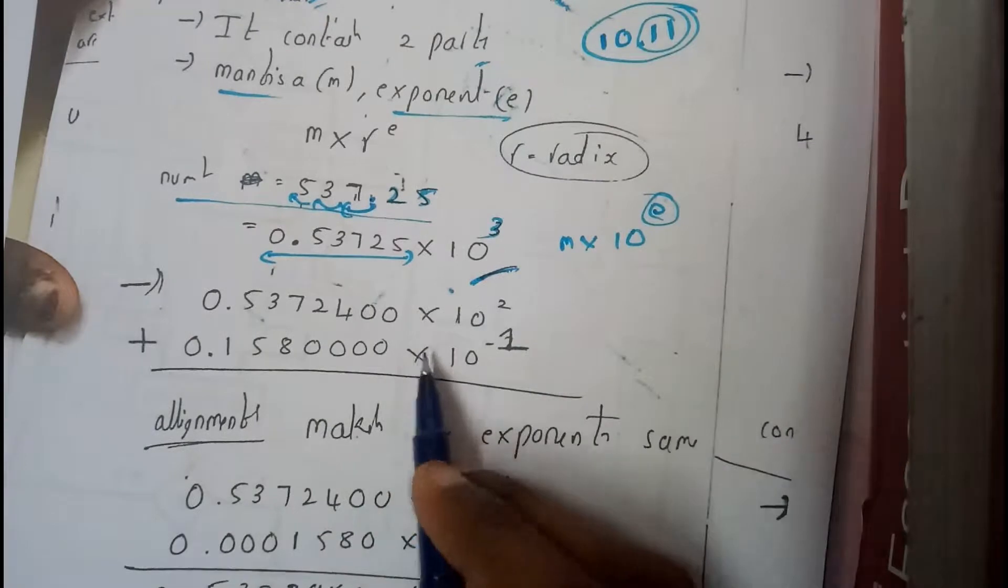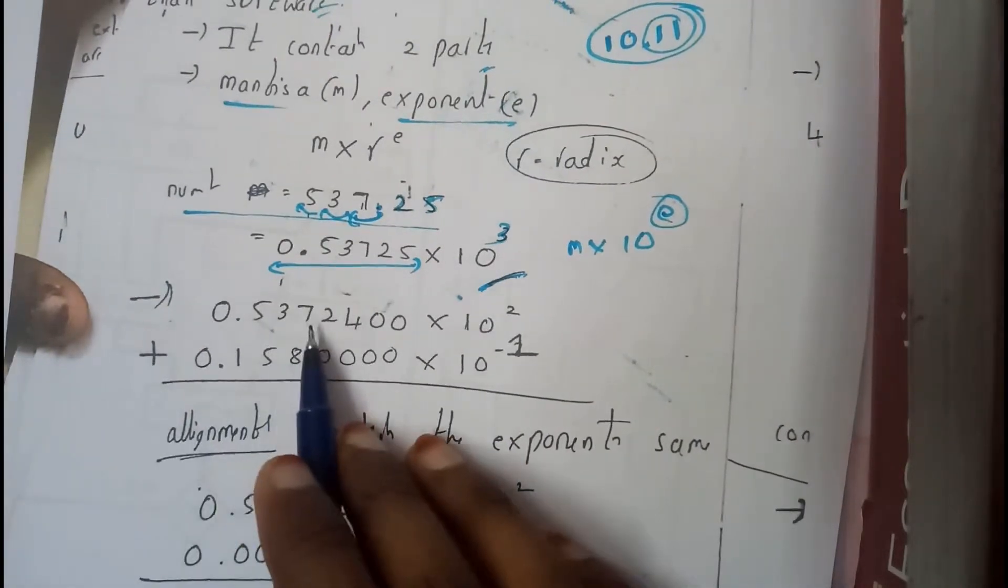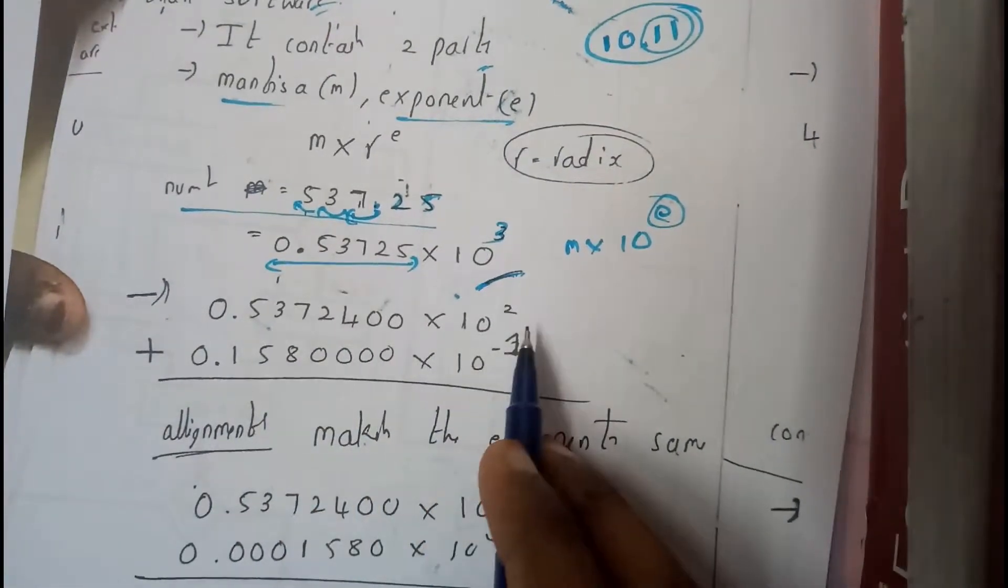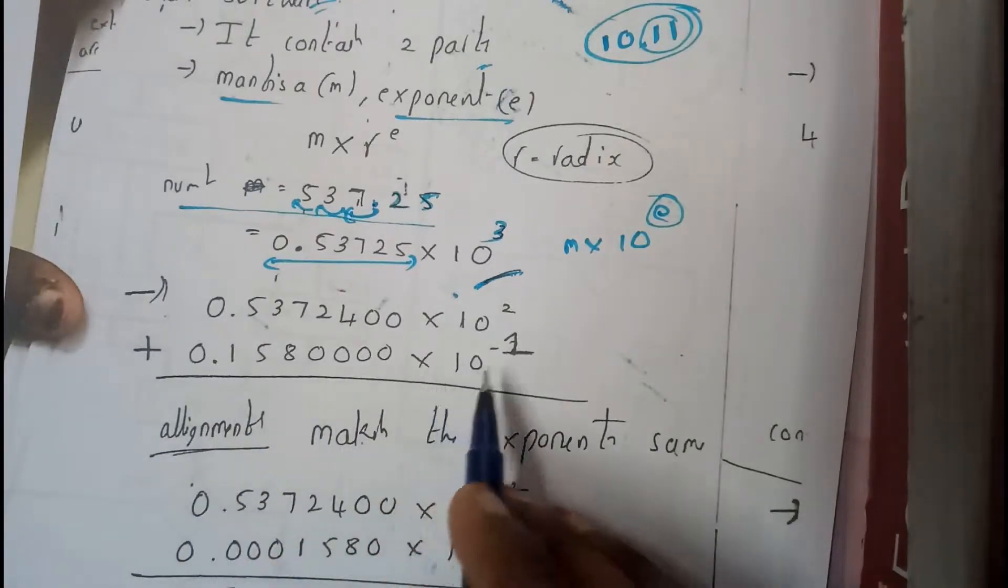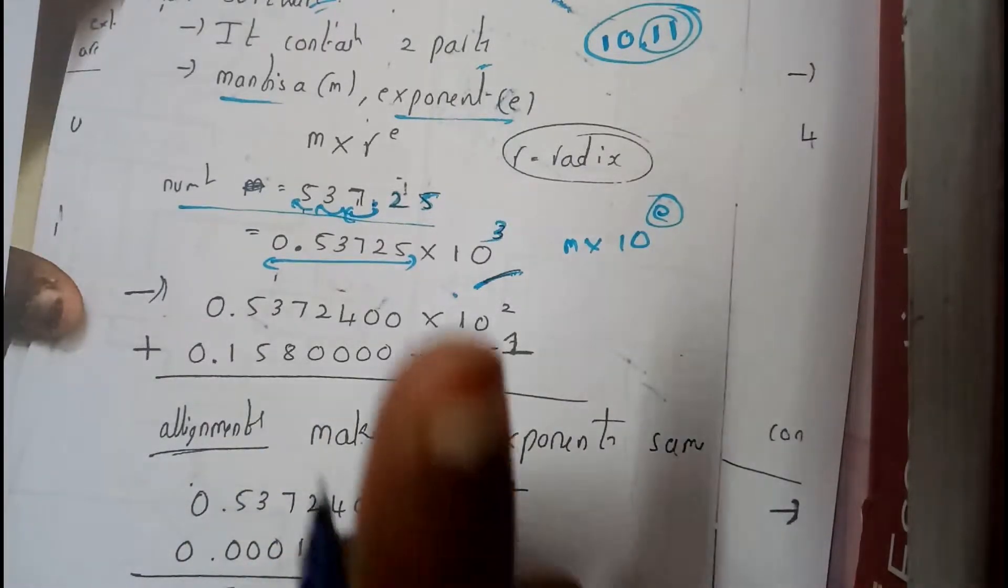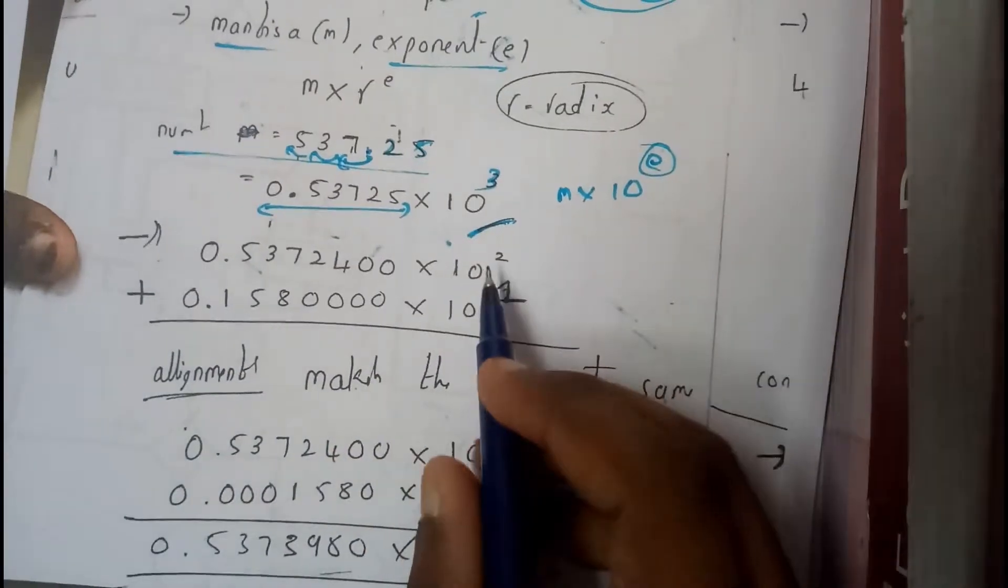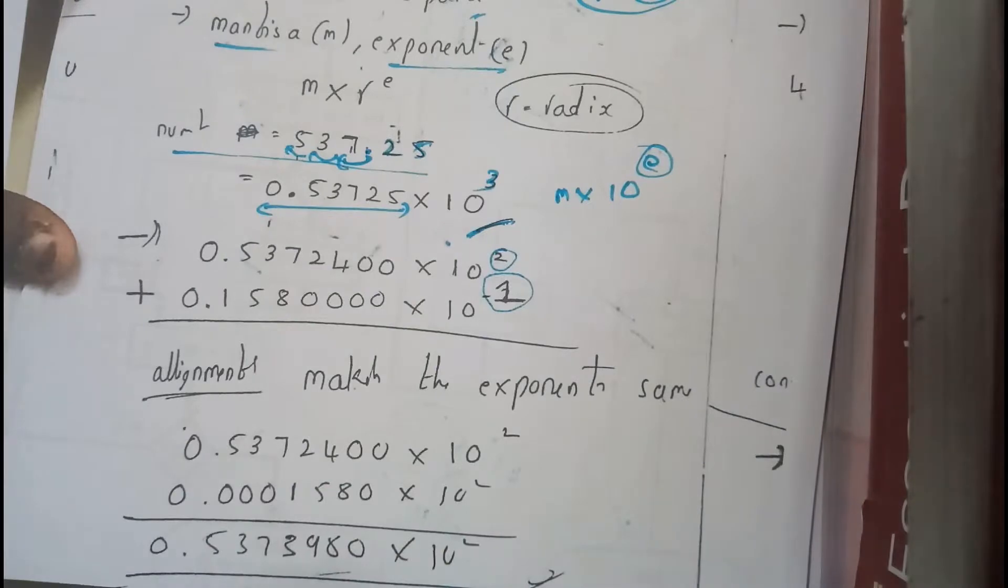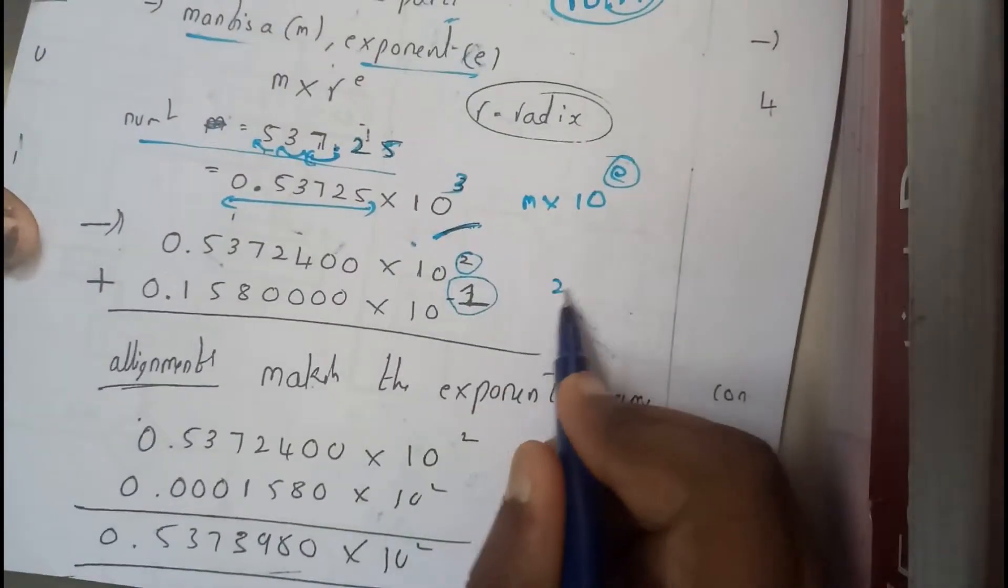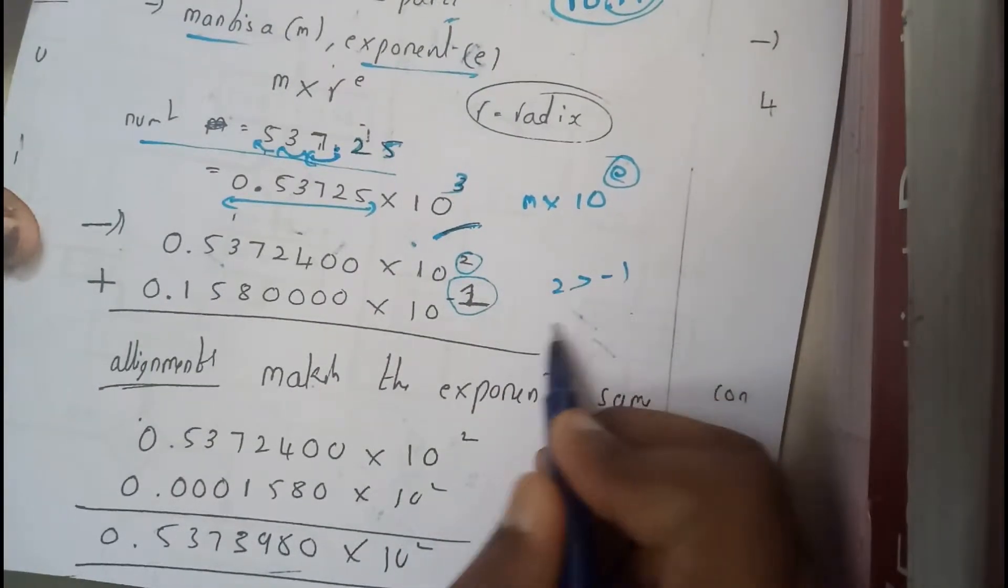Let us try to do addition between these two numbers: 0.5372400 into 10 square and 0.15840 into 10 power minus 1. The first step that you do is align these powers. Here it is 2, here it is minus 1.